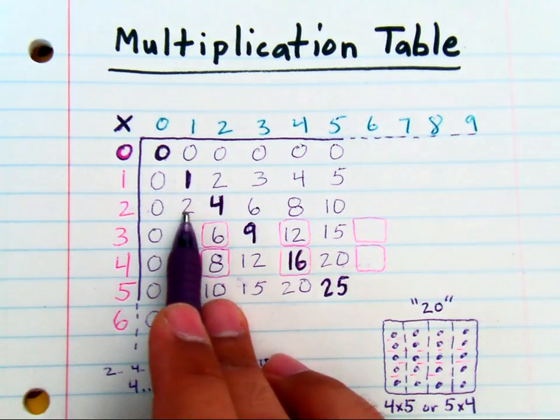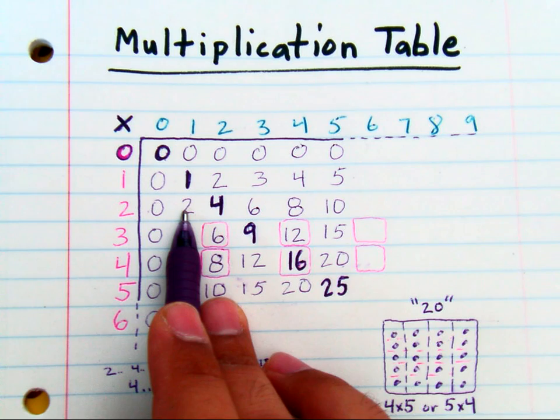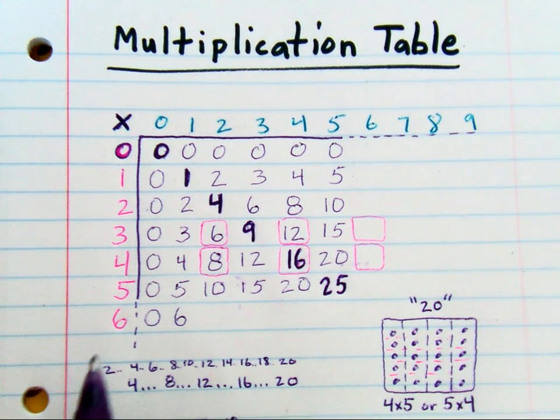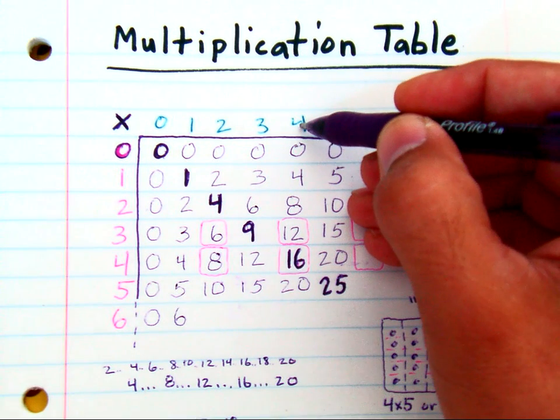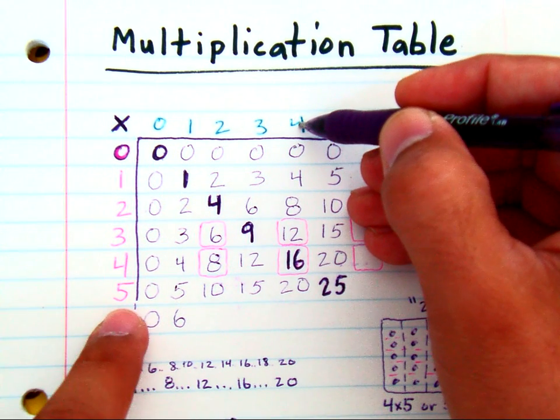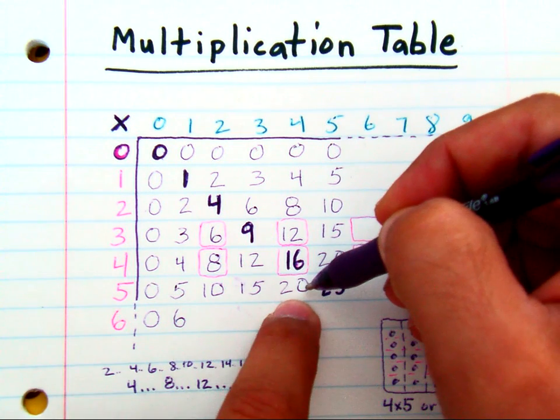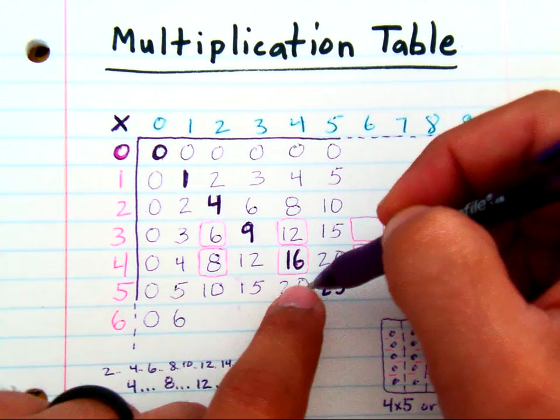One times two is two. Now if you have, let's say, four groups with five in each group, you're gonna have 20. So that tells you that four times five is 20.